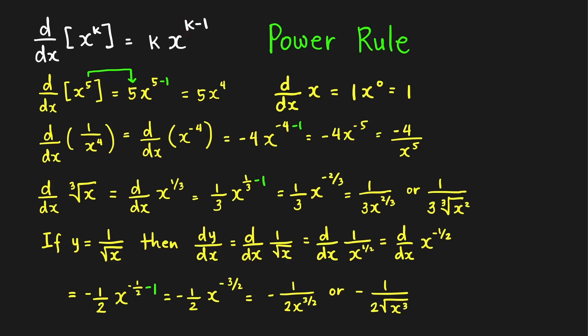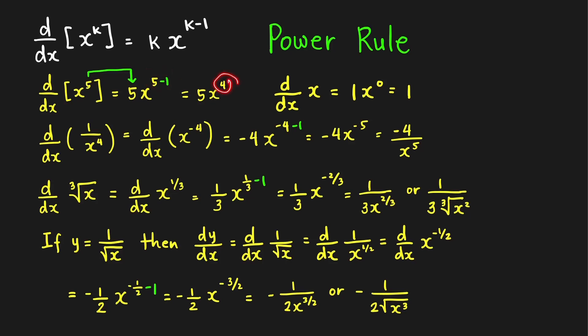For example, if you're computing the derivative of x raised to 5, our k here is 5. We bring down this 5, and then subtract 1 from 5 — reduce the power 5 by 1. So that is 5 minus 1, and 5 minus 1 is of course equal to 4. So the derivative of x raised to 5 with respect to x is equal to 5x raised to 4.